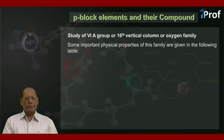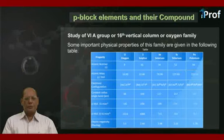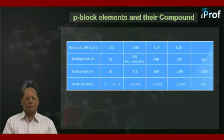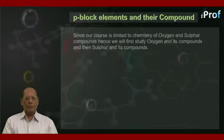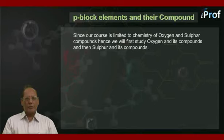We shall now start the study of Group 6A, the 16th vertical column, also known as the Oxygen Family. Since our course is limited to the chemistry of oxygen and sulphur compounds, we will first study oxygen and its compounds, and then sulphur and its compounds.